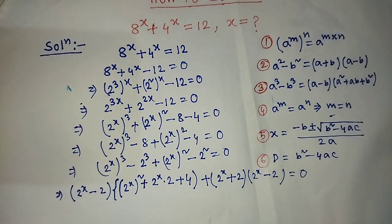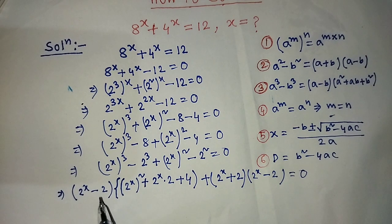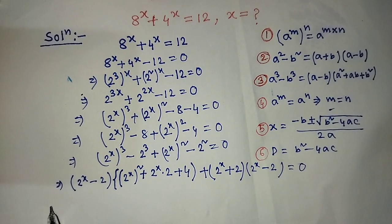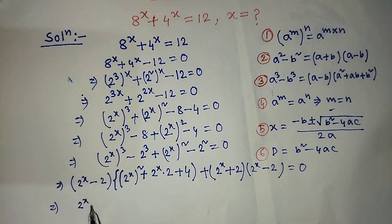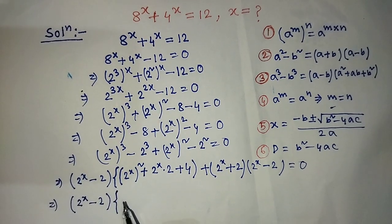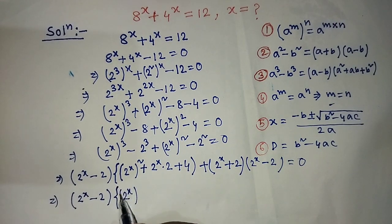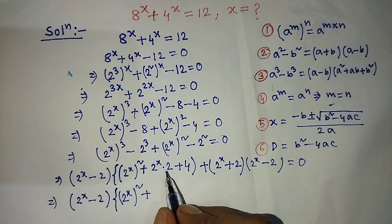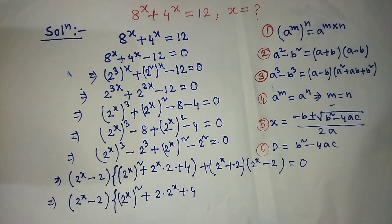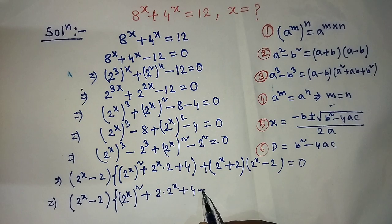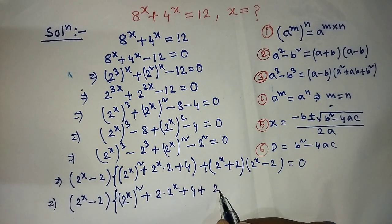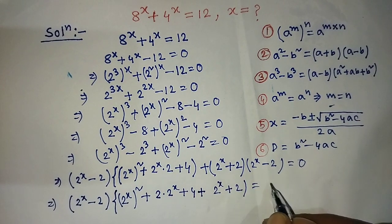In both terms, there is a common factor of (2 to the power x minus 2). So we take it common from both terms, giving: (2 to the power x minus 2) times [2 to the power x whole squared plus 2 into 2 to the power x plus 4 plus 2 to the power x plus 2] is equal to 0.